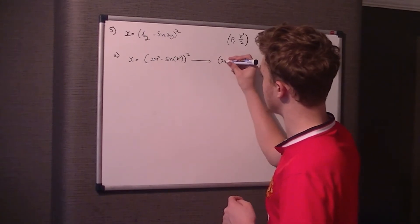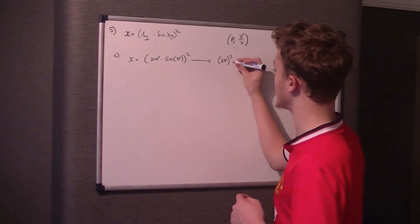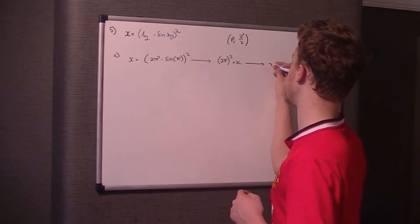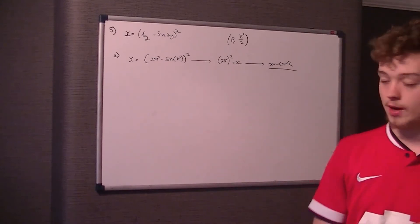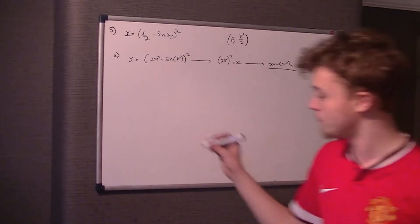So it just leaves you with x is 2pi all squared equals x. So therefore, x is equal to 4pi squared. So therefore, p is equal to 4pi squared. This is quite a nice, simple part A.